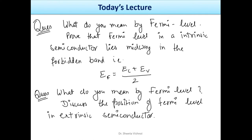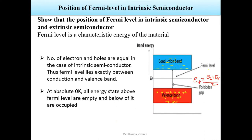What do we mean by Fermi Level? In Fermi Levels, we will show both intrinsic and extrinsic. Fermi Level is a characteristic of the material. One definition is that Fermi Level is an energy that corresponds to the center of gravity of the conduction electrons and holes weighted according to their energy.